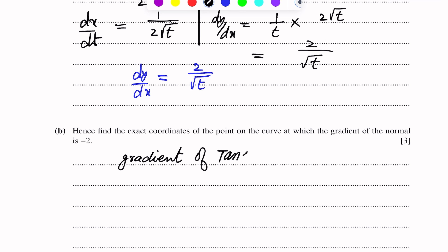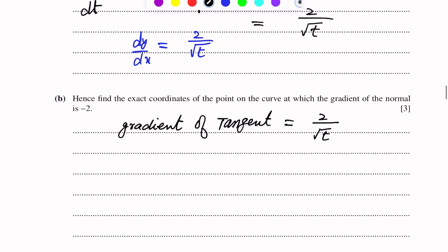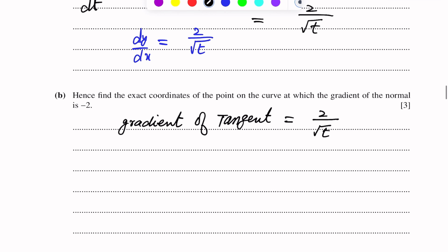This is the final answer: dy over dx equals 2 over square root t. This is dy over dx expressed in terms of t.